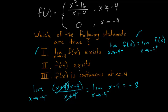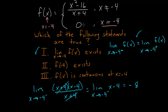For number 2, we need to know whether or not the function evaluated at negative 4 exists. We plug in x equals negative 4 into our function and see if we get a value. When x equals negative 4, we use the bottom part of our piecewise function, and f does indeed have a value — that value is 0. So the function does exist at negative 4.